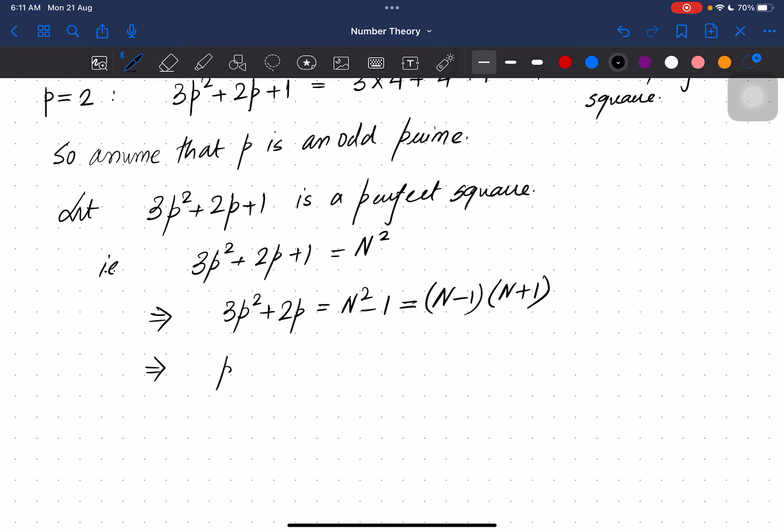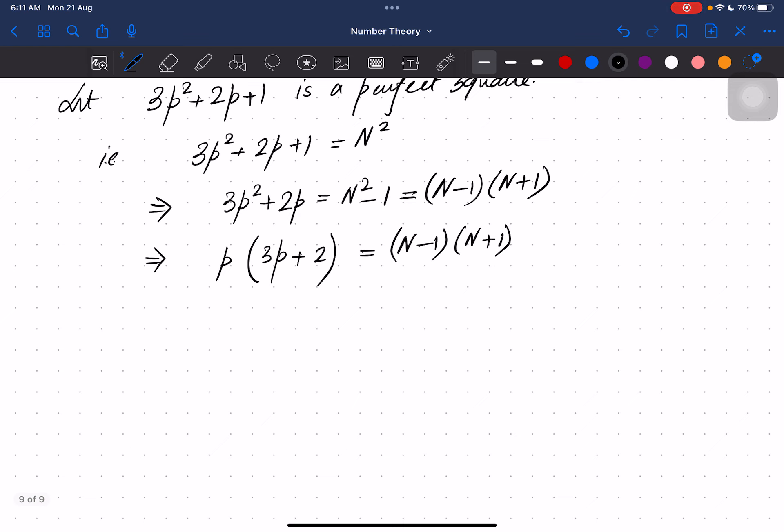From the left hand side, I can take a common p out. So it will be p(3p + 2) equals (N-1)(N+1). Now by using the property that p is a prime, we have that p either divides N-1 or p divides N+1.